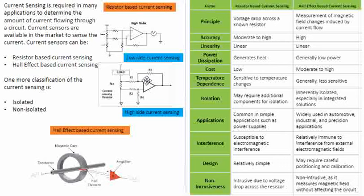In high power applications we prefer isolated sensors. These are generally costlier compared to non-isolated sensors. When we use ready-made ICs for current sensing, everything is included inside the chip — the amplifier and corresponding circuitry — and only the sensing element needs to be selected and placed outside.